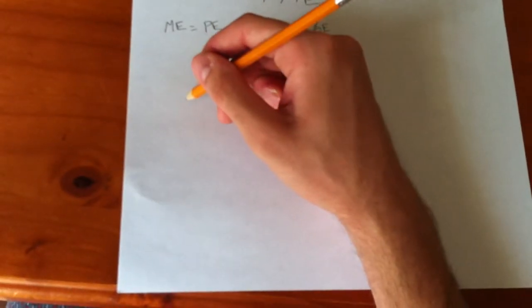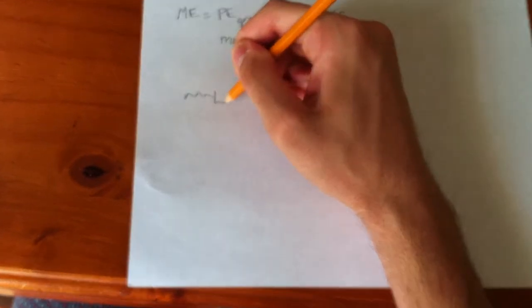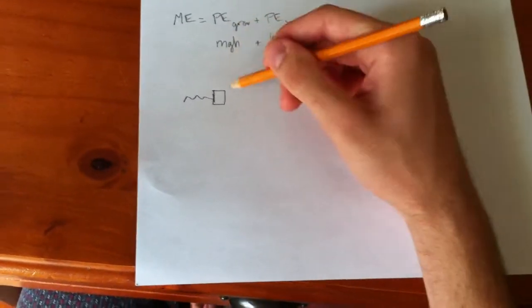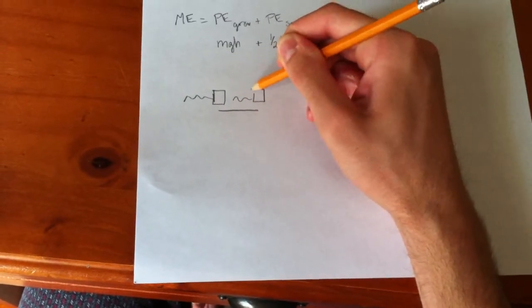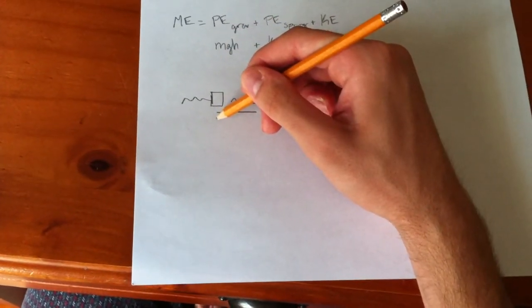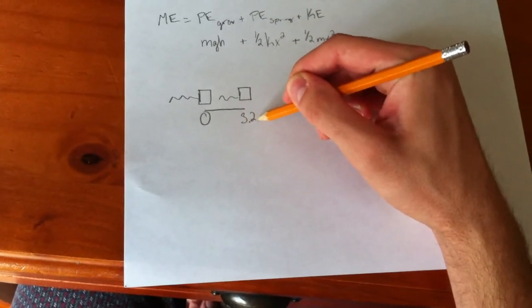So, we're going to find the total mechanical energy of a spring system with the mass at the end of it, went from here to here. We'll say that its displacement right here is zero, and its displacement right here is 3.2 meters.